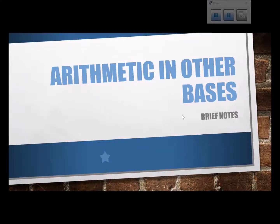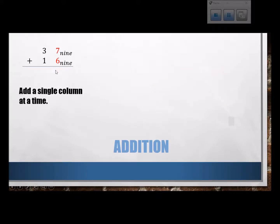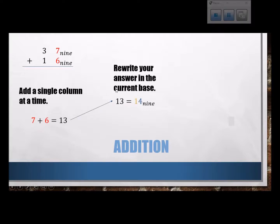I just want to give a quick overview of doing arithmetic when you're working in other number bases. So let's start with addition. If I'm trying to do this addition problem, what you do is add a single column at a time. So here you would take 7 plus 6, which gives you 13.